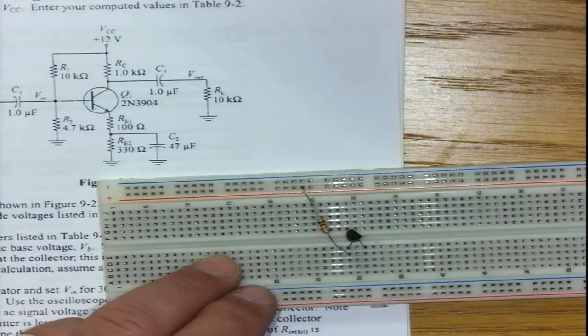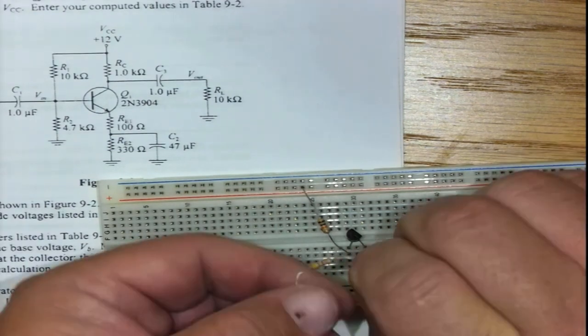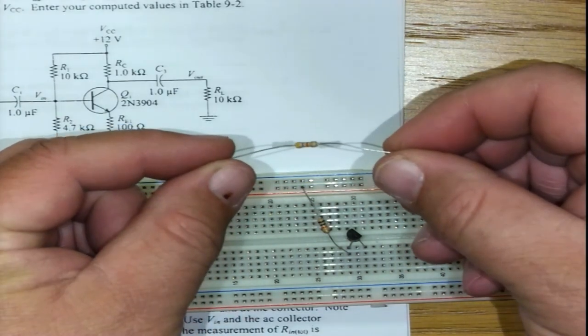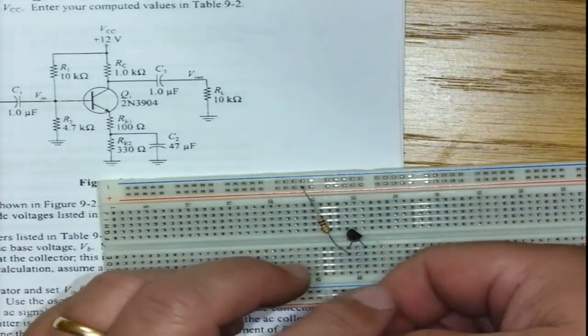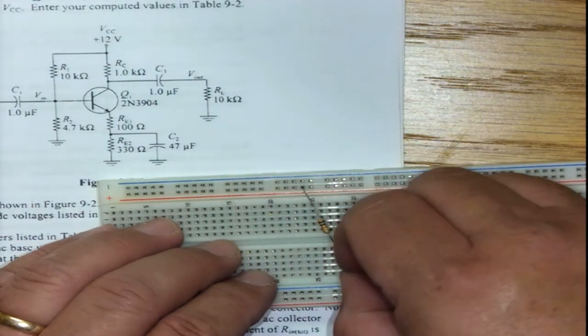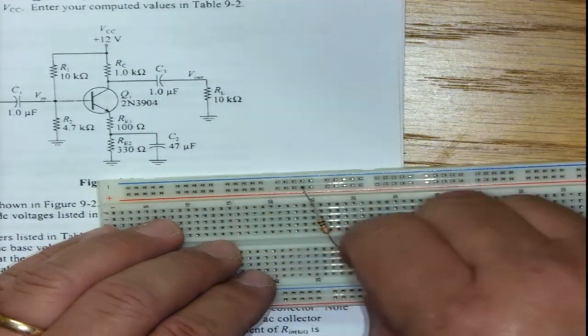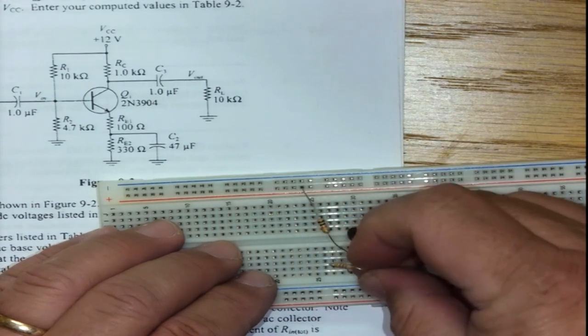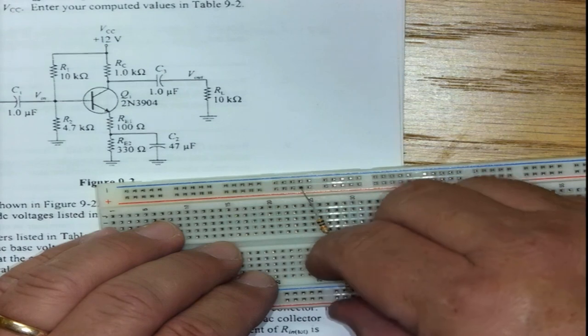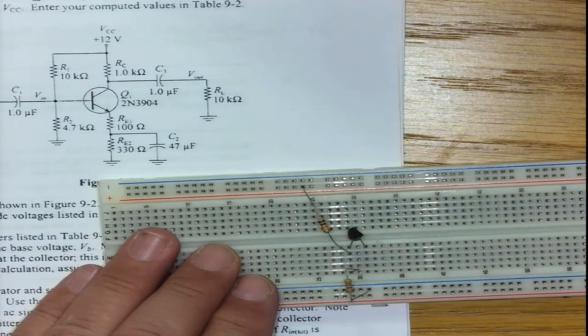The next resistor I'm looking for would be a 4k7, that would be yellow, purple, red. Yellow, purple, red. Nice. That one goes from the base. It plugs in there. Maybe it was a bit stiff but it doesn't matter and this little resistor can stick in there.